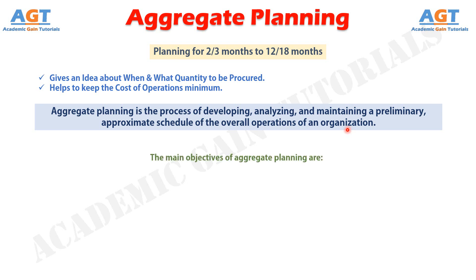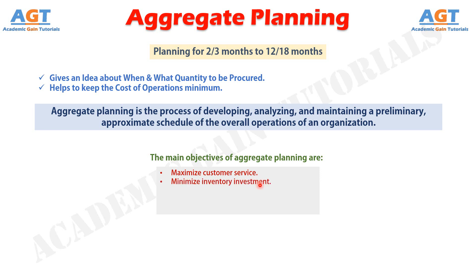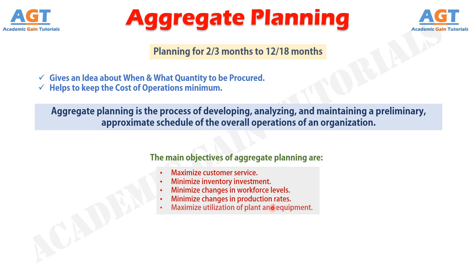This longer-term perspective on resource use can help minimize short-term requirements changes with the resulting cost savings. The main objectives of aggregate planning are: to maximize customer service, minimize inventory investment, minimize changes in workforce levels, minimize changes in production rates, and maximize utilization of plant and equipment.